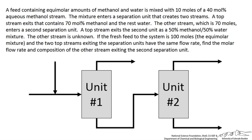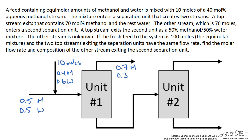We have a feed containing an equal molar amount of methanol and water, so 0.5 methanol and 0.5 water. It is mixed with 10 moles of a 40 mole percent aqueous methanol stream, so 0.4 methanol and 0.6 water. This mixture enters a separation unit that creates two streams. A top stream exits containing 70 mole percent methanol and the rest water, so 0.7 methanol and 0.3 water.